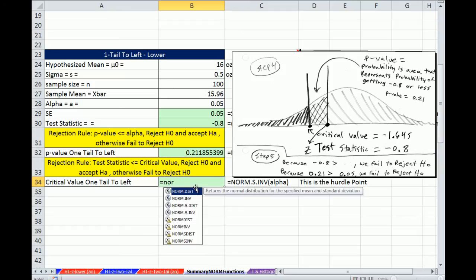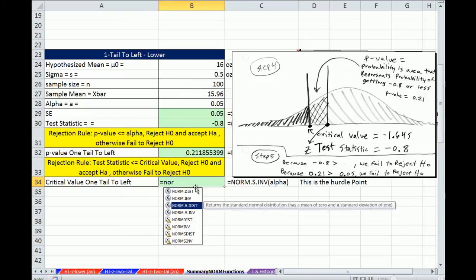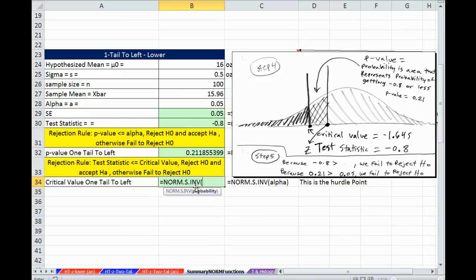We'll use our standard normal curves, our S's. Inverse goes from a probability to a z. We're going to throw in our alpha, which then will spit out our hurdle point.